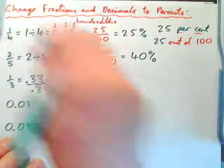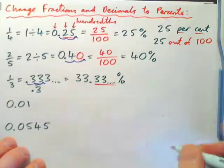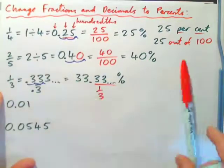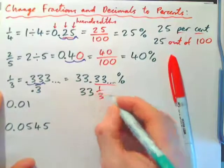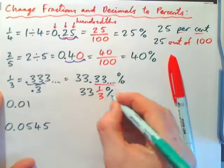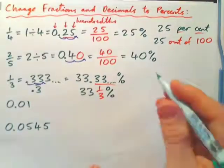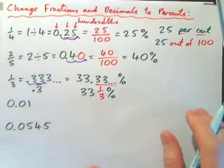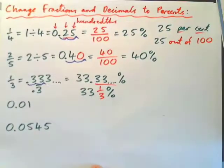But of course, this point three, three, three part is one-third. So what we have is thirty-three and one-third percent. And you might have seen that in a grocery store—sometimes they say thirty-three and a third percent off the price of clothes or something.